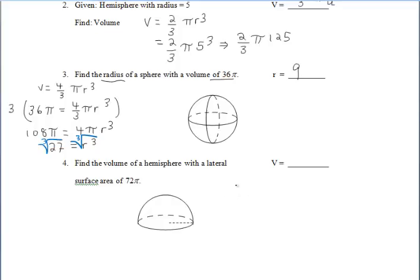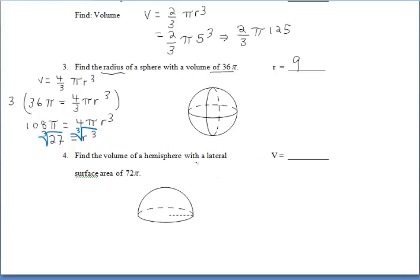And then finally for number four, we want to find the volume of a hemisphere if we're given a lateral area of 72 pi. So we have to think back to our surface area formulas. To find the lateral area of a hemisphere, we do 2 pi r squared, but we know that our lateral area is 72 pi, so we're setting it equal to 2 pi r squared.